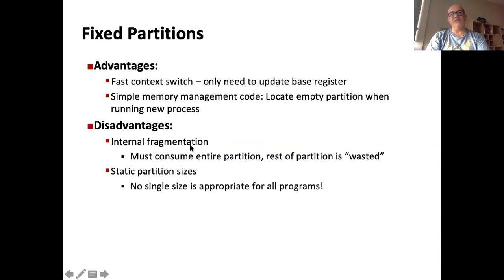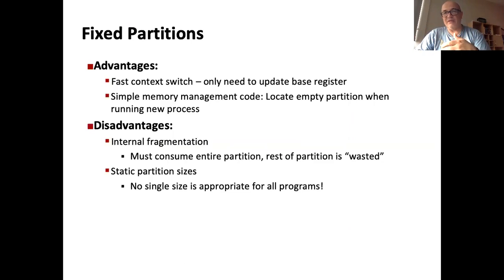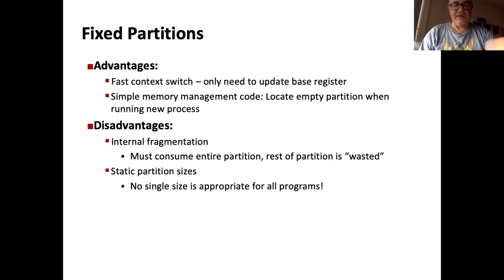This was used in early Intel architectures where 64-kilobyte segments were used to separate code and data within the same program. The advantage is that it is fast and the memory management code is very simple. However, it has internal fragmentation — if 1 kilobyte is too small you increase to 1 megabyte, but then a small 4-kilobyte program wastes nearly all of its 1-megabyte partition, and a very large program won't fit. A single partition size doesn't work for everyone. This wasted space inside a partition is called internal fragmentation.